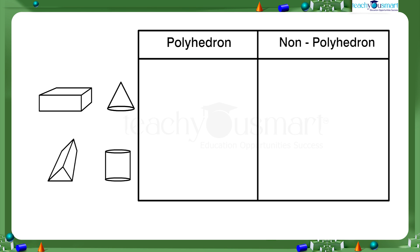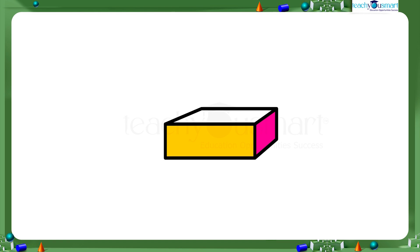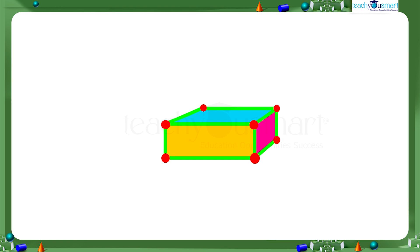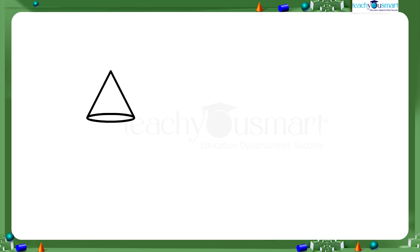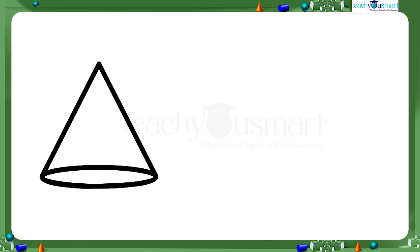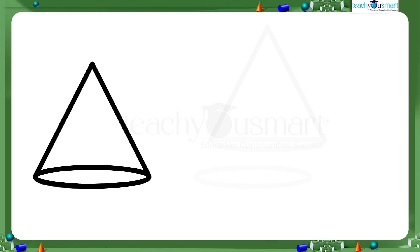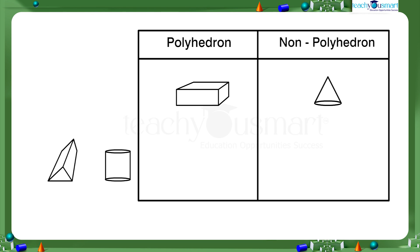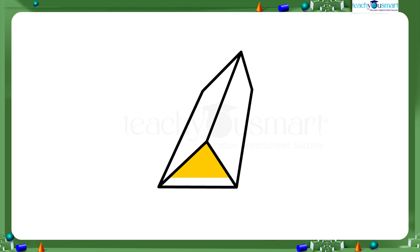Figure one shows a cuboid with flat faces, straight edges, and sharp vertices, so the cuboid is a polyhedron. Figure two shows a cone, which has two surfaces — one is a flat surface, but the other is a curved surface — and it has no straight edges and sharp vertices, so the cone is not a polyhedron.